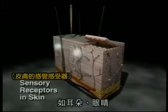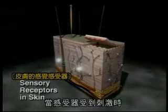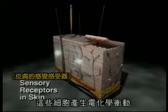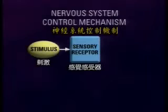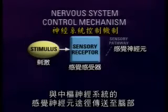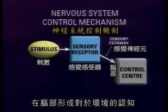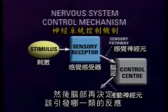When receptor cells are activated, they produce electrochemical impulses called action potentials. These potentials travel along the sensory neural pathways of the peripheral and central nervous systems to the brain, where they form our perception of the environment. What we perceive depends on the part of the brain receiving the impulse.